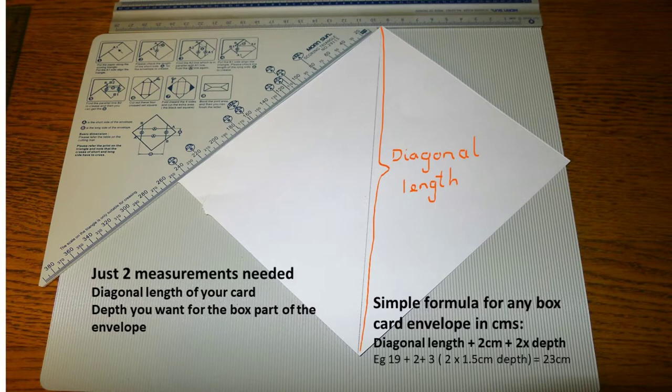So if you take the diagonal length, add 2 extra centimeters and twice the depth of the box, which in my case I'm using 1.5cm depth, and you just add them together, and then you make a square in whatever paper you're using for the envelope.